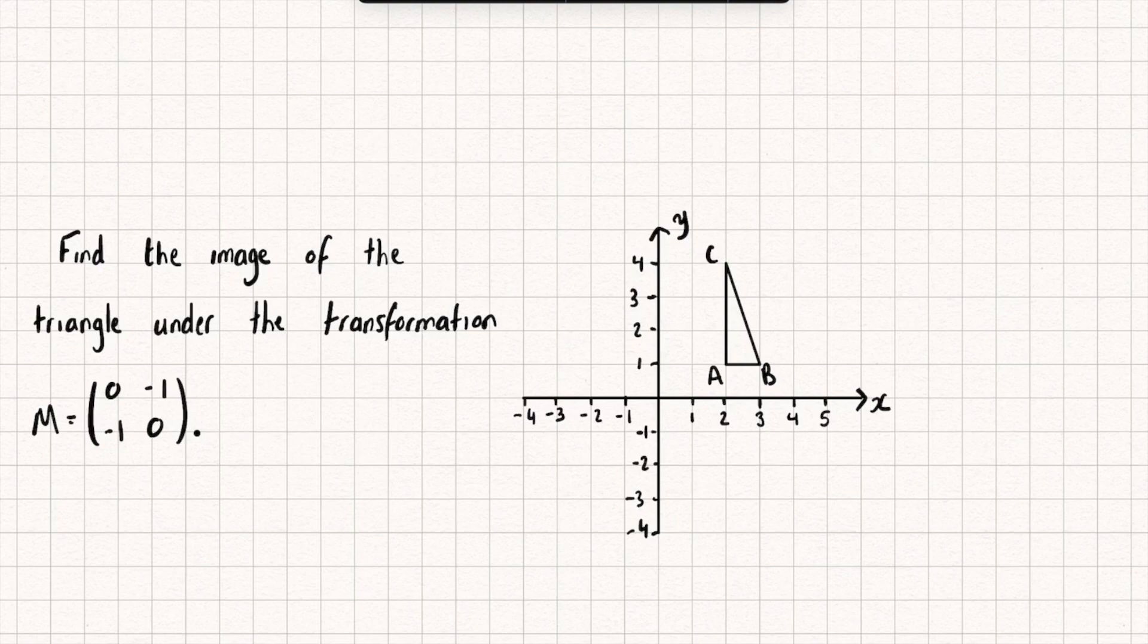For now, let's take a look at how this works. Here, we need to find the image of the triangle under the transformation (0, -1; -1, 0), or m. The way this transformation is going to work is we're going to take each of the vertices of our triangle, so a, b, and c, and multiply it by the matrix m.